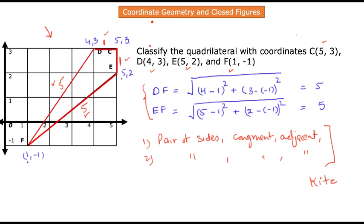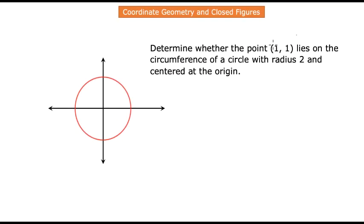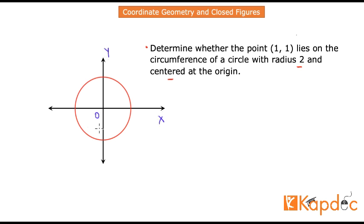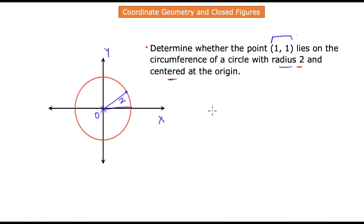Now let us look at another example involving a circle. The given scenario is to find out whether the point (1, 1) lies on the circumference of a circle that has radius 2 and is centered at the origin. We have an XY coordinate plane with a circle centered at the origin with radius 2 units, and we need to determine whether point (1, 1) lies on this circle.